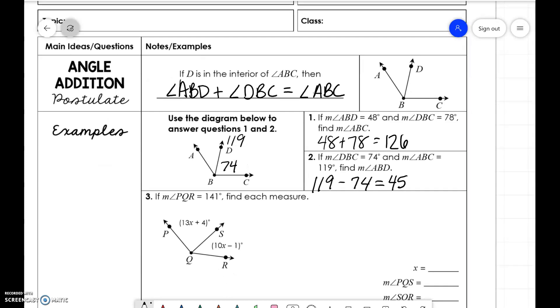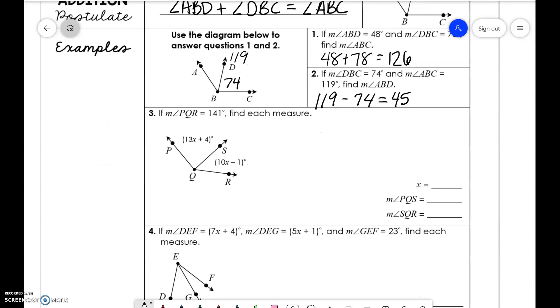Next problem, we're dealing with algebra. So we're saying PQR. So the whole angle here is 141. So we're just saying this part 13x plus 4 plus 10x minus 1 is equal to 141. And then we're solving that for x.